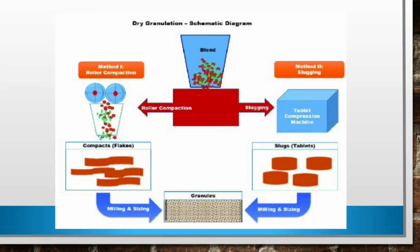In roller compaction, the mixed powder is squeezed through two counter-rotating rollers to form a compressed sheet. The sheets are brittle and break easily into flakes. The flakes need careful treatment to break them into granules, after which they can be milled to the desired size.